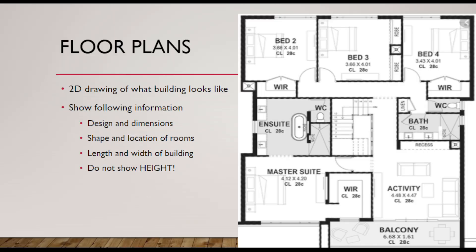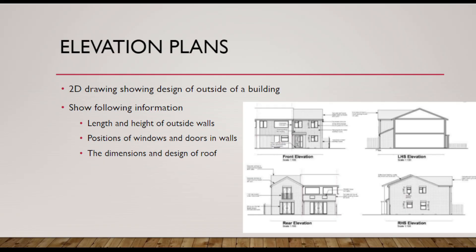When we look at floor plans, here's an example. We can see indicated there a bedroom — in fact bedroom two, three, and four — your balcony, your master suite, your ensuite, your bathroom, passageways, and a lounge. This is your floor plan. It's a two-dimensional drawing of what the building looks like, showing the design and dimensions, the shape and location of rooms. You can see the shape of the rooms, the door opening, the length and width of the building — but it does not show the height.